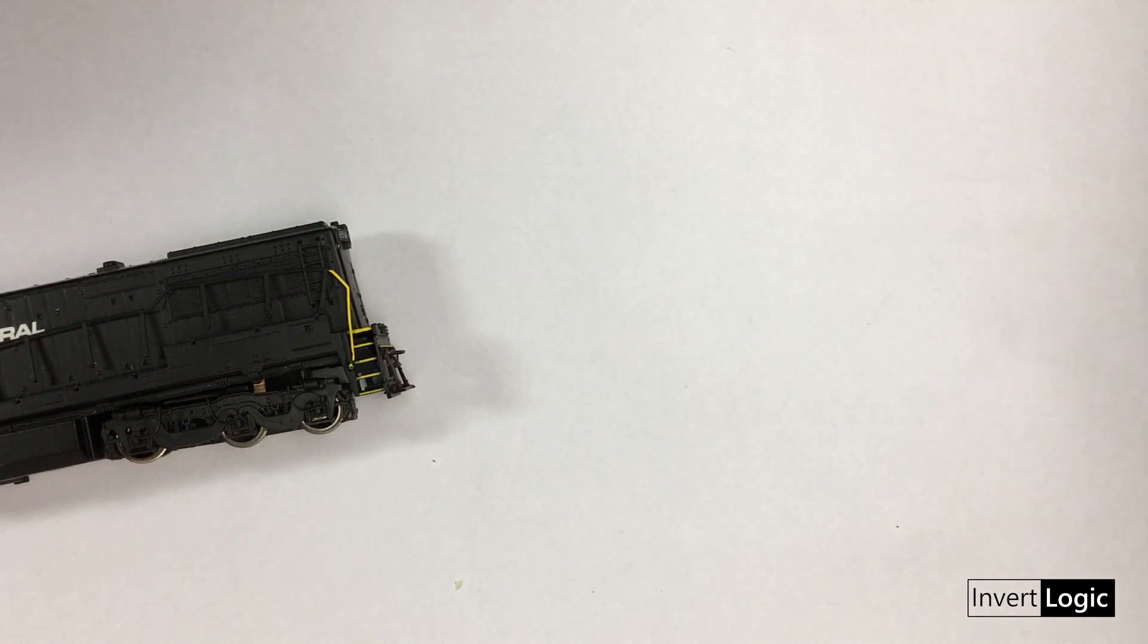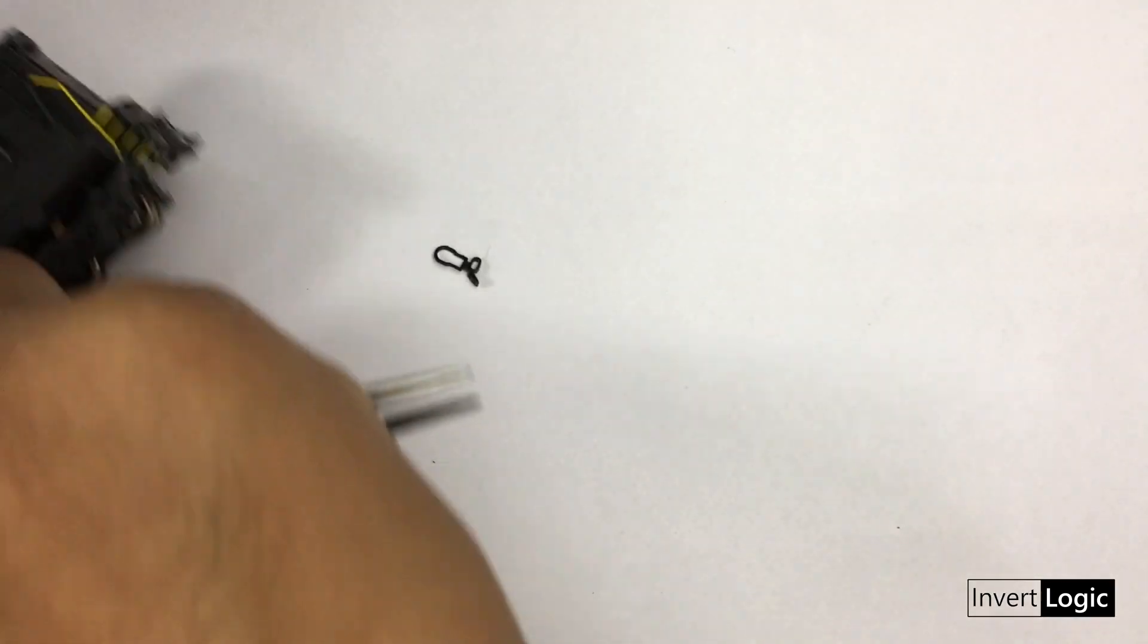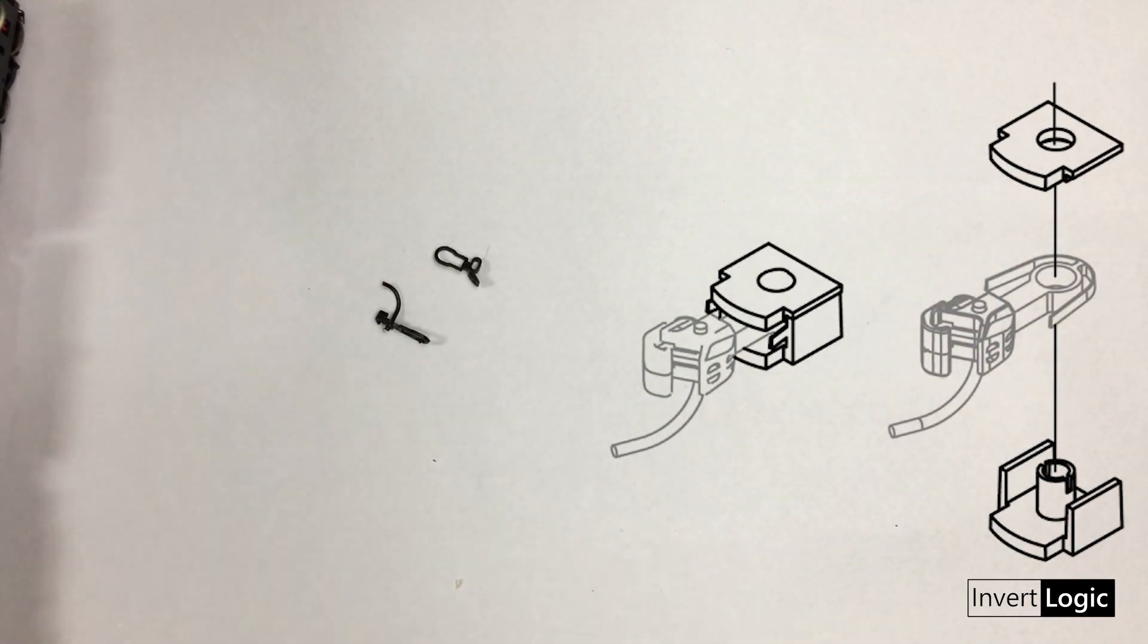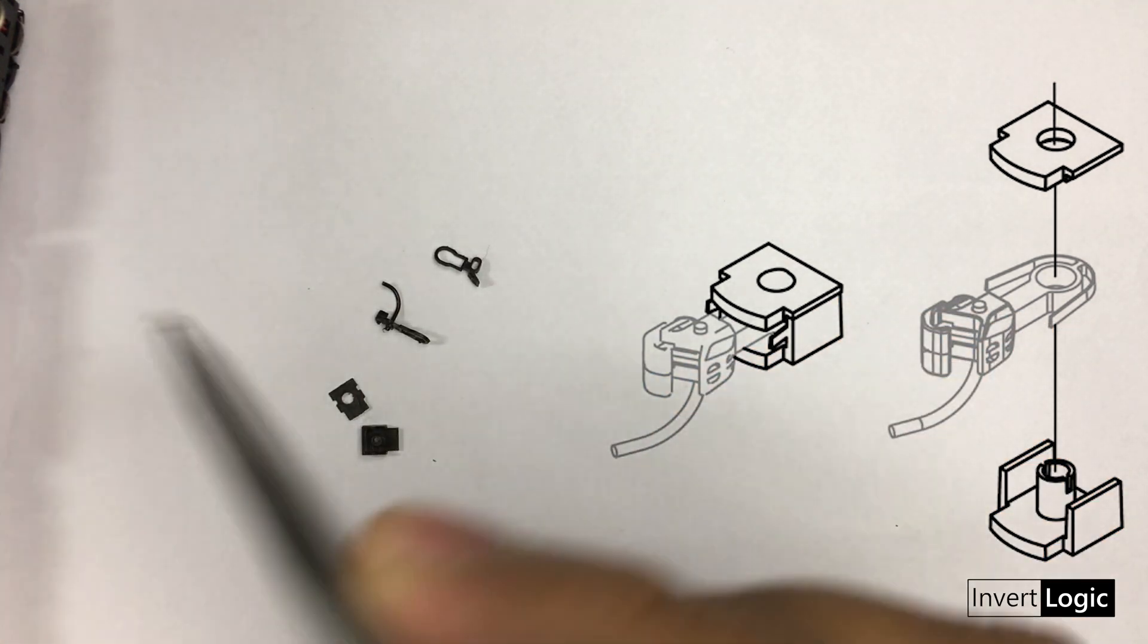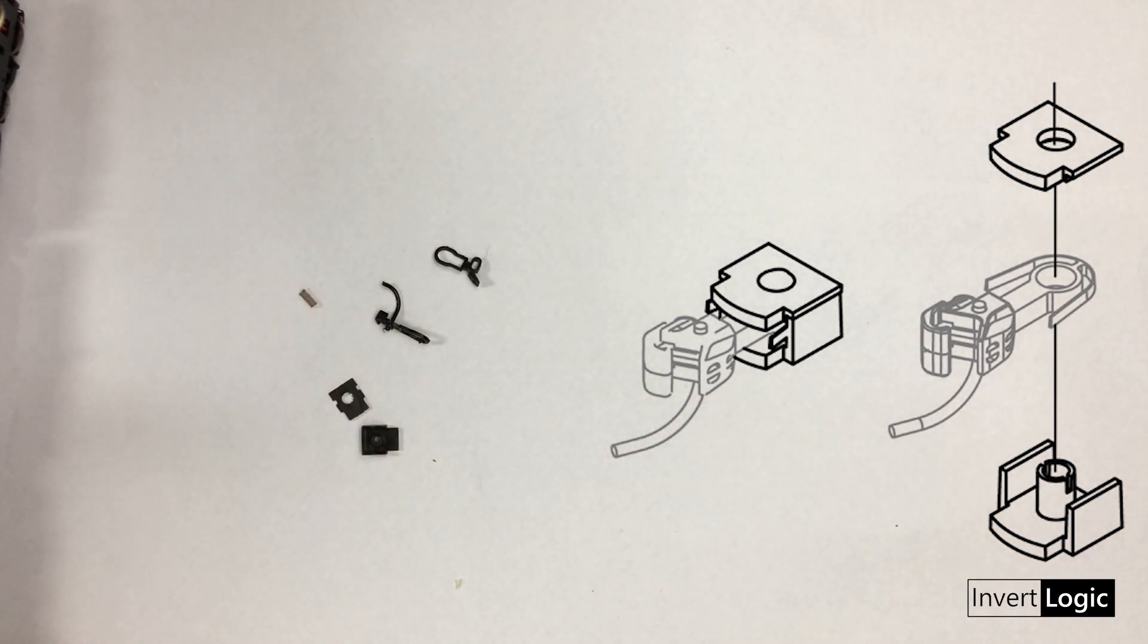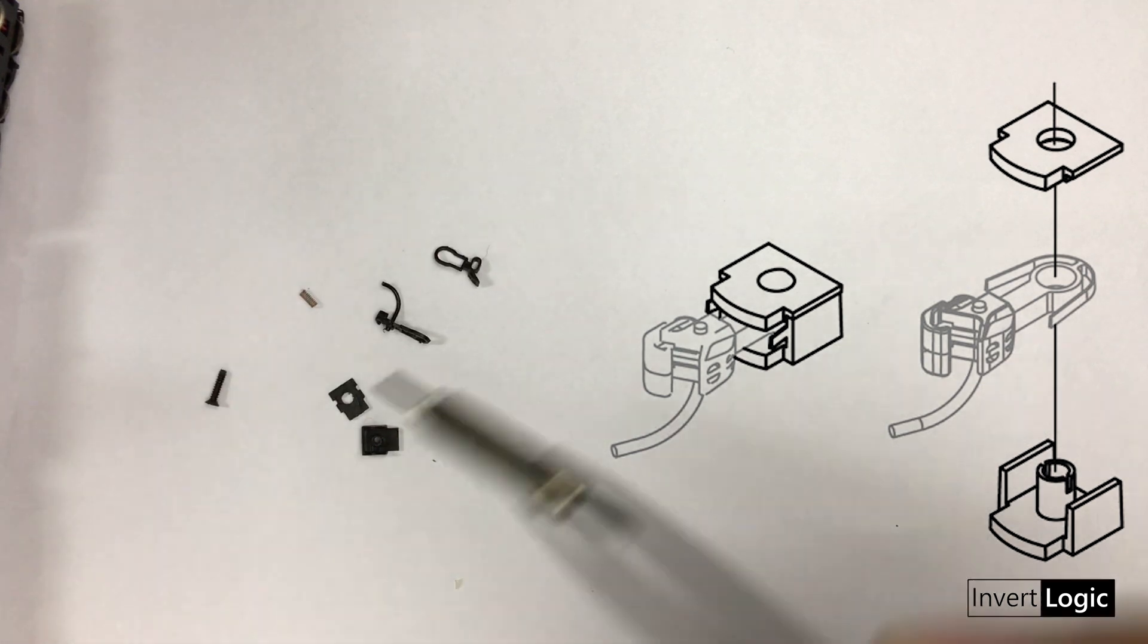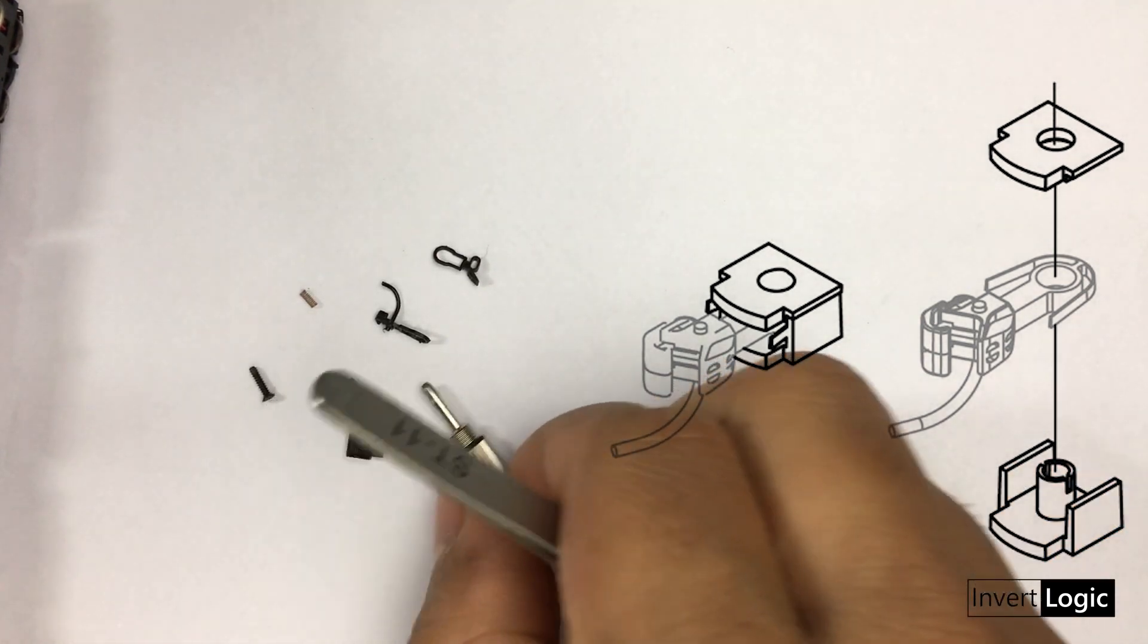In this video I'll show you how to assemble the knuckle coupler. This is an Arnold locomotive and has a coupler similar to Micro-Trains. I'm not sure the exact name, but it looks similar to Micro-Trains with a spring and similar parts. Here are the parts we need to start the assembly.